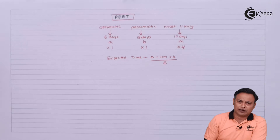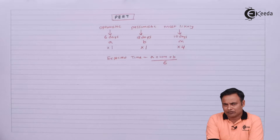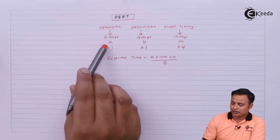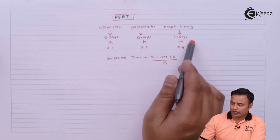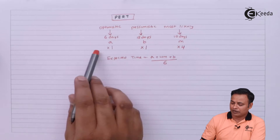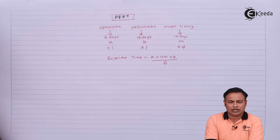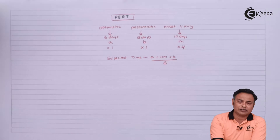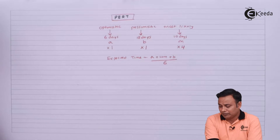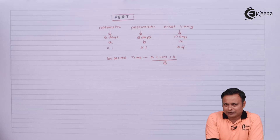Based on these past observations, mathematicians derived a formula to calculate the expected time. This is a weighted average: one times 'a', plus four times 'm', plus one times 'b', divided by one plus one plus four, which equals six. So the formula is: Expected Time = (a + 4m + b) / 6. This gives us one single time called the expected time.